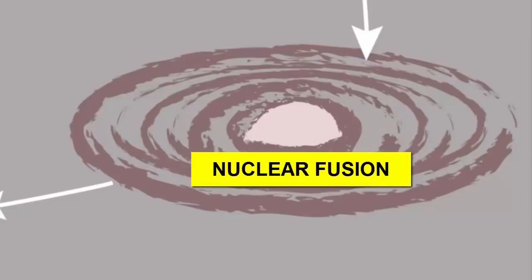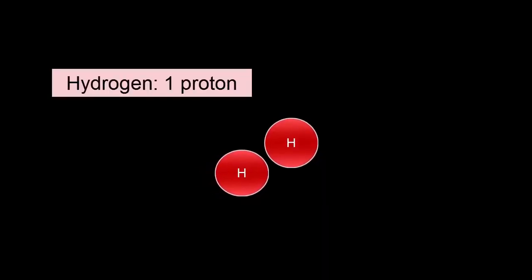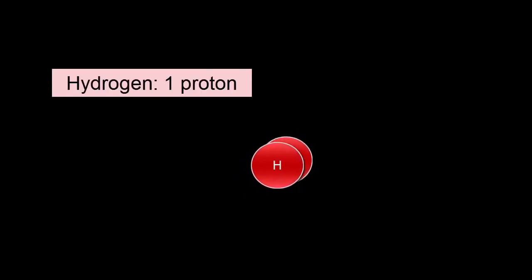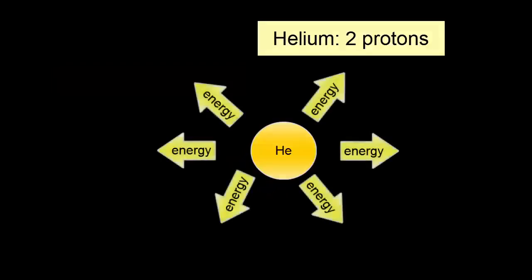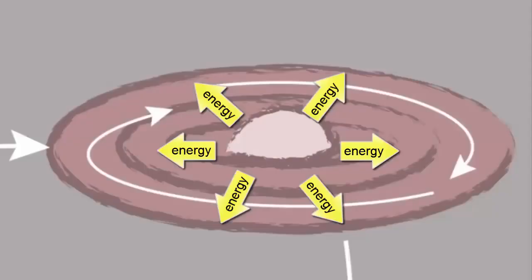Nuclear fusion is a process by which atomic nuclei fuse together to create new atoms. For example, when one hydrogen, one proton in the nucleus, fuses with another hydrogen, one proton in the nucleus, we get helium, two protons in the nucleus. During the fusion process, energy is released and shines outward from the center or core of this ball of gas. These giant balls of shining gas are called stars.